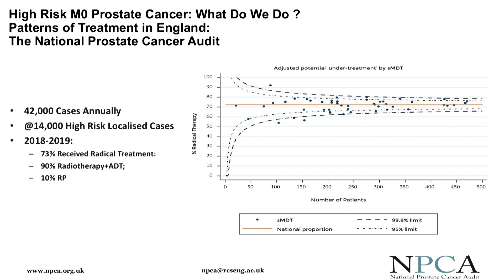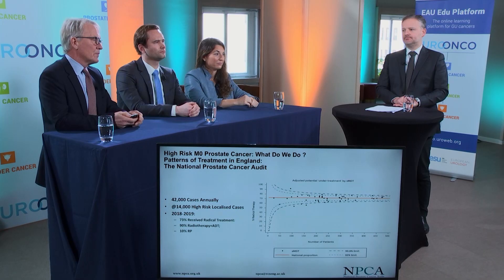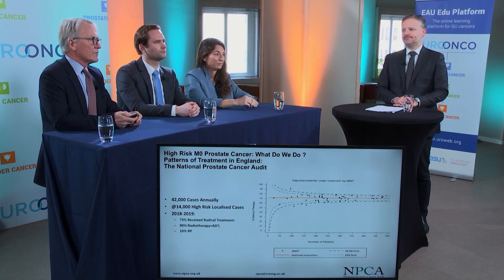From those patients, we have good data. From 2018–2019, of the 14,000 who had high-risk localised disease, about three quarters received radical treatment — mostly with radiotherapy and ADT — and about 10% with radical prostatectomy.